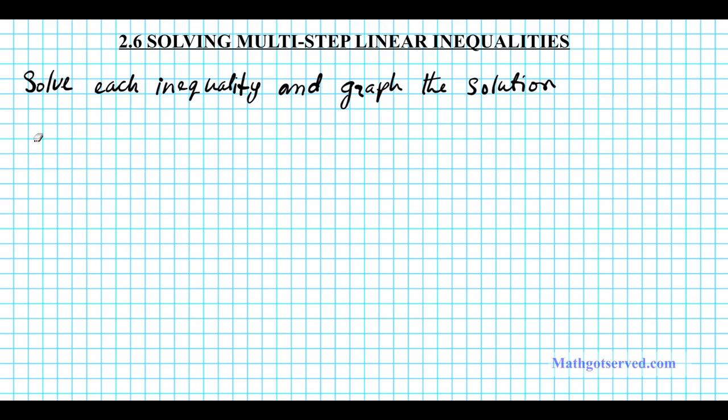Problem number one we have four times the quantity one minus seven p less than or equal to 200.